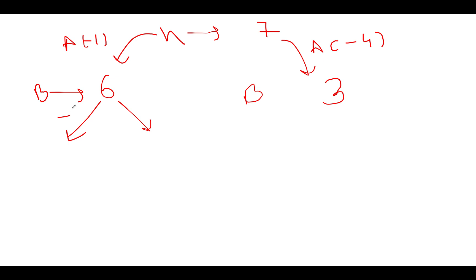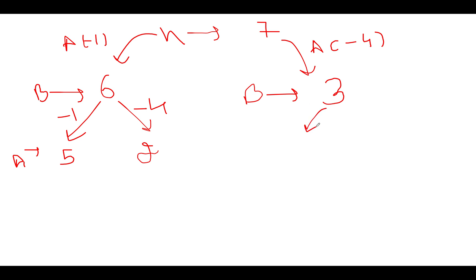Bob again has two choices: he can reduce by one stone or by four stones. If Bob reduces one stone from six, five stones remain for Alice; from three, only one possibility exists since four exceeds three, so Bob can only remove one stone, leaving two for Alice. Let's continue expanding these sub-trees level by level.